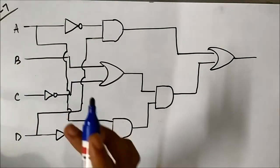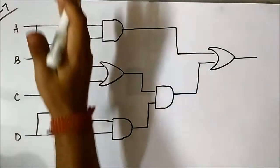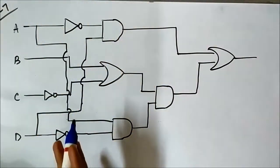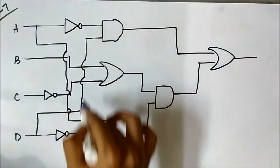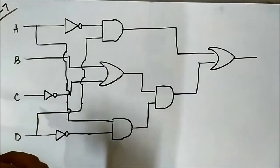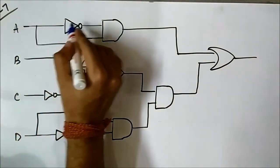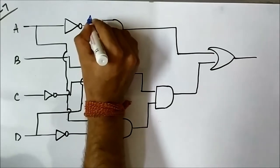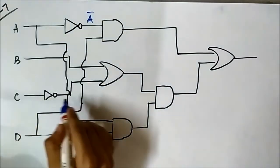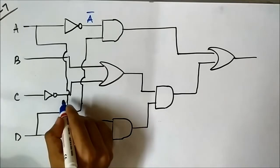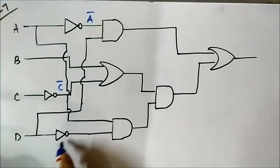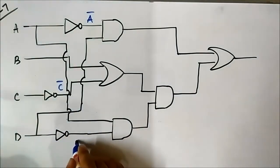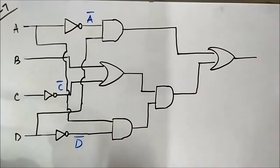To divide this circuit, we segment it into the first layer, which has three NOT gates or inverters. The first NOT gate has input A, so output is A complement. The second NOT gate has input C, so output is C complement. The third NOT gate has input D, so output is D complement. Then here is the second layer.